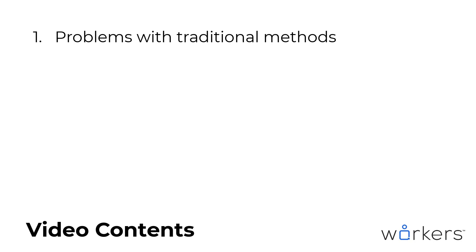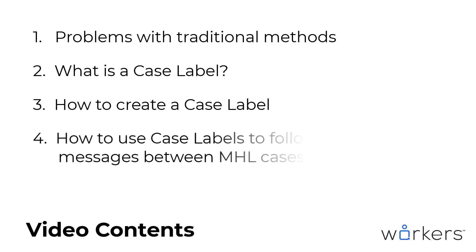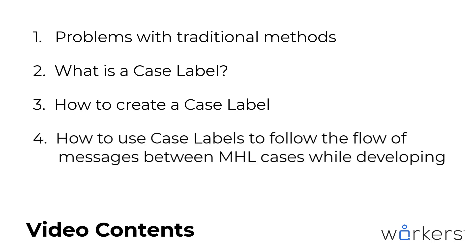This video will be broken up into the following parts. First I'll present the problems with the traditional method of using string constants to define which case of a message handling loop to send a message to. I will talk about what a case label is and discuss its various parts and features. Then I will demonstrate how to create a case label by use of a quick drop shortcut, and then show you how to use case labels to follow the flow of your messages between message handling loop cases while developing.